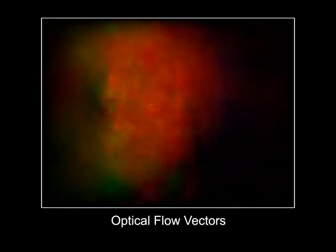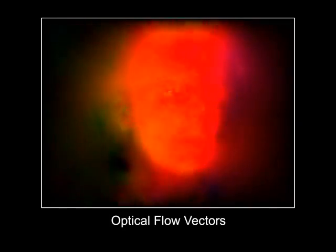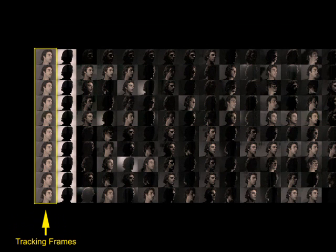Since our subject moves during the basis capture, we need to align the frames using image warping. Failing to do this can produce image smearing, as seen in this non-motion compensated video. We detect and compensate for this motion using optical flow. Since performing optical flow between differently illuminated frames is difficult, we insert diffusely lit tracking frames at several times the target frame rate to improve the tracking results.